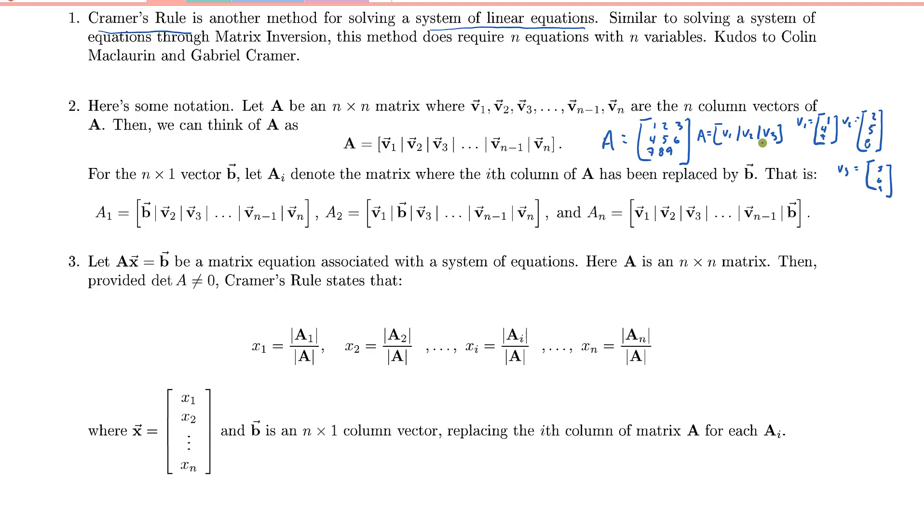To add to that, we're now going to introduce the notation Ai, which is the matrix A with a subscript i. And what this means is that we're going to take some column vector with the same number of rows as our matrix A, and we are going to replace the i-th column of matrix A with that vector B.